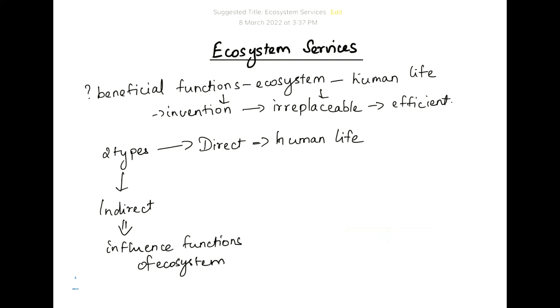An example of direct ecosystem service will be provisionary and regulatory. So provisionary services are the ones like supply of food, water, and other resources.